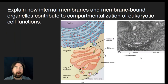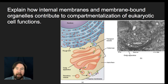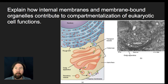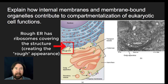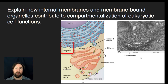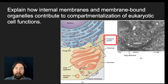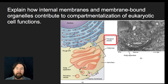Let's talk about how internal membranes and membrane-bound organelles contribute to compartmentalization of eukaryotic cell function. One specific example is the making of a protein that would be secreted by the cell. The information for how to make a protein is found inside the nucleus — DNA contains that information. That information is transcribed into a messenger RNA, which leaves the nucleus and goes to the rough endoplasmic reticulum, where it interacts with a ribosome and is translated into a polypeptide chain — a long string of amino acids.